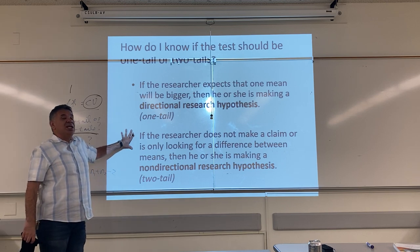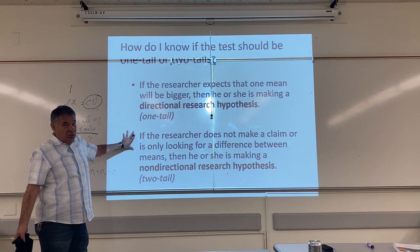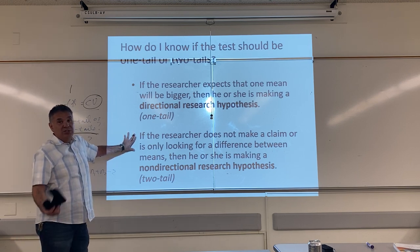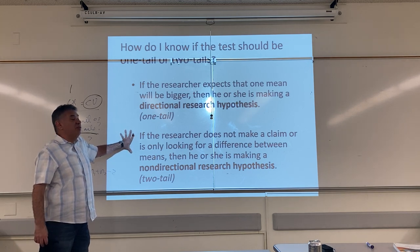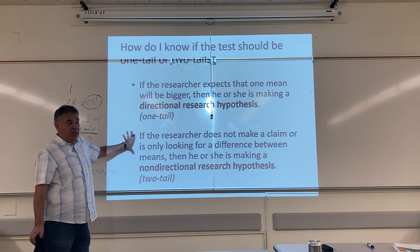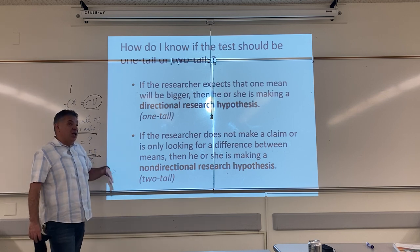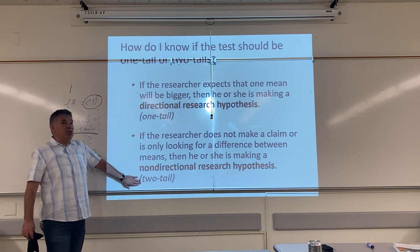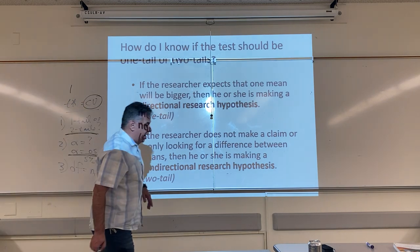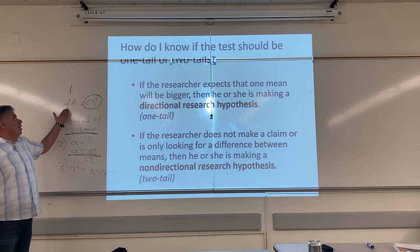But if the researcher doesn't tell you which group is going to score higher, or lower, or better, or worse, or faster — if he or she is looking for any difference and doesn't care who's better — then they are making a non-directional research hypothesis. They are looking for any difference, and that's when we do a two-tail test. That's the first question we have to answer to look up T-star, the critical value for T.